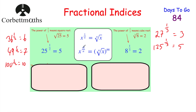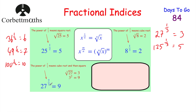What if the fraction doesn't have 1 in the numerator? If you have x to the power of m/n, take the nth root first, then raise to the power of m. Whatever is on the denominator gives the root, and whatever is on the numerator gives the power. For example, 27 to the power of 2/3: denominator is 3, so take cube root of 27 = 3, then square it (numerator is 2): 3² = 9.